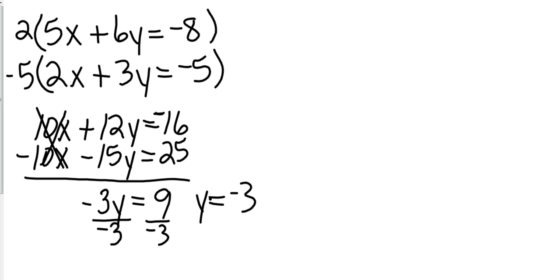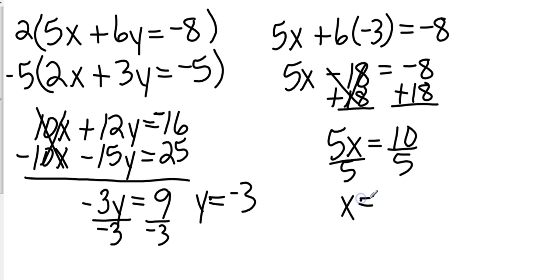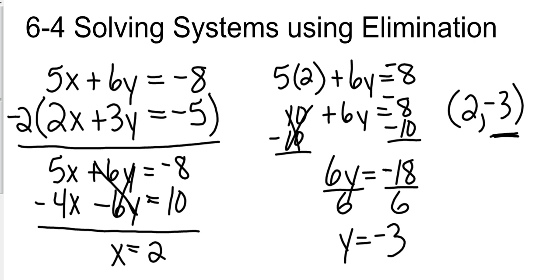And so now we'll take this y value and substitute it back in. Again, it doesn't matter, I'll just take the top one, 5x plus 6 times negative 3. That's going to give me 5x, positive 6 times negative 3 gives me negative 18. Add 18 to both sides, 5x equals 10, divide by 5, and x equals 2, giving me a final answer of 2, negative 3. Look familiar? It should, because I get 2, negative 3.